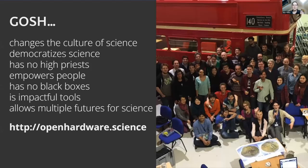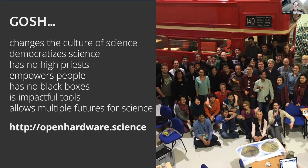The first thing we did as a community was really come up with a manifesto — and I know there's also been a manifesto and public statement put out in front of this conference. It's quite important for community building that people have a shared goal and purpose. We were really trying to think about what does open source mean in the context of open hardware in science? For example, 'no black boxes' in the lab is quite useful — you understand more about the science if you understand the instrumentation. Very relevant for this community as well is having impactful tools and allowing multiple futures for science.